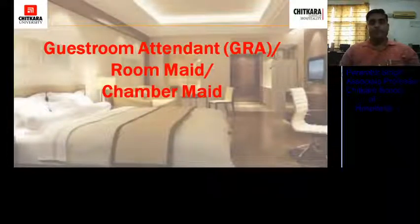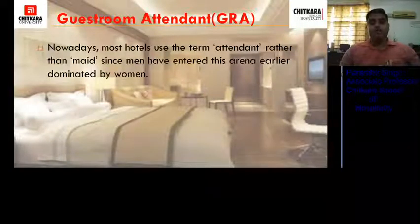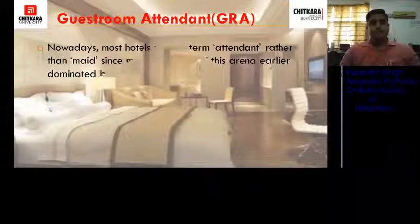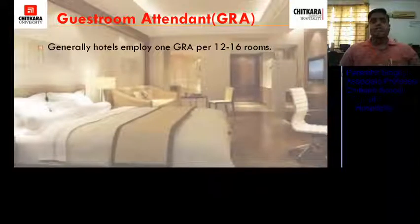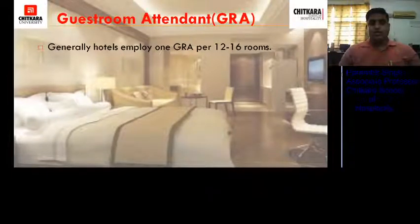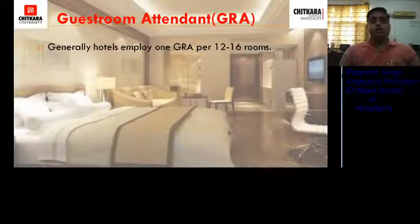Guest room attendant or GRA — other names are room maid and chambermaid. Nowadays most hotels use the term attendant rather than maid, since men have entered this arena, which was earlier dominated by women. A GRA generally cleans 12 to 16 rooms in a morning shift. A normal room takes around half an hour to clean, so in an 8-hour shift, 16 rooms can be cleaned. The variation of 12 to 16 exists because suite rooms require more than half an hour — a suite room can take one hour or more.